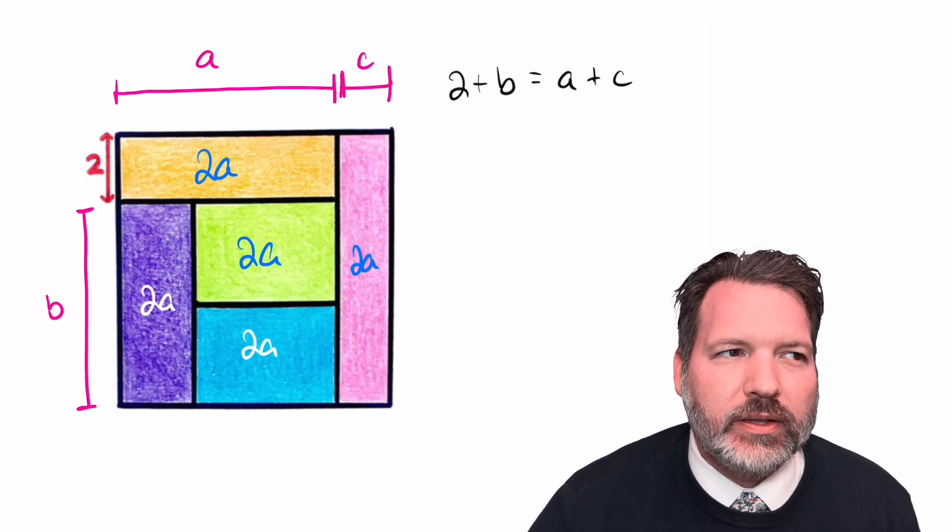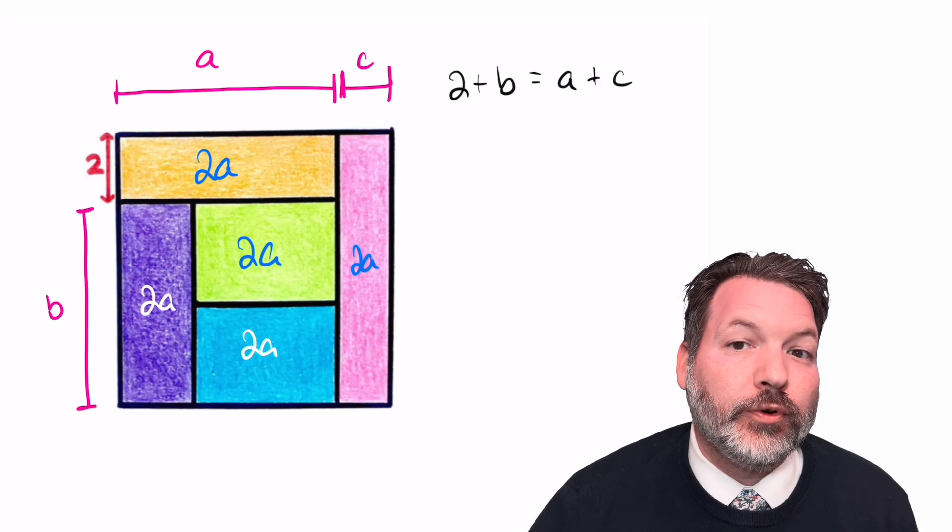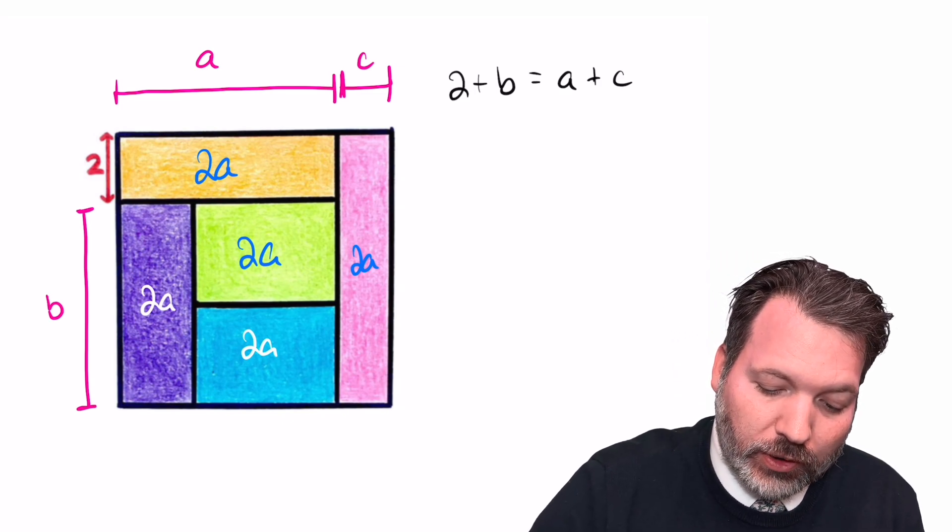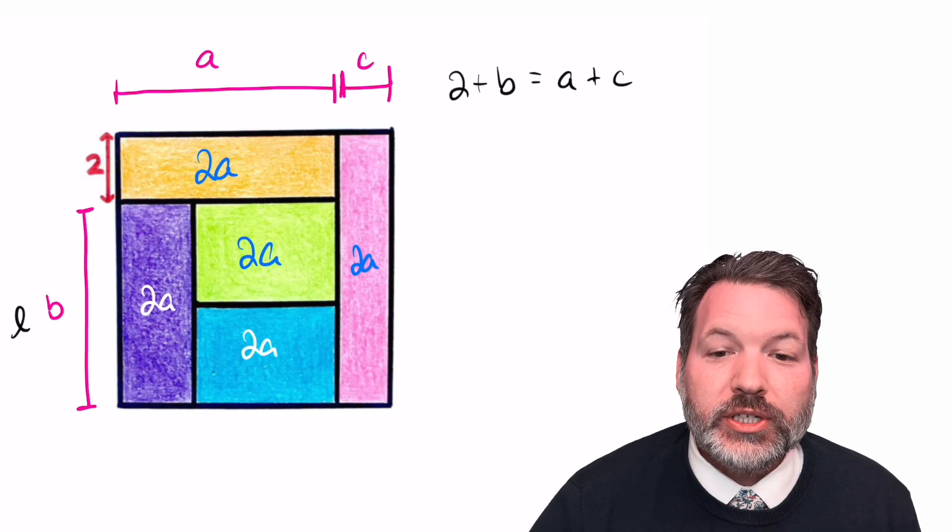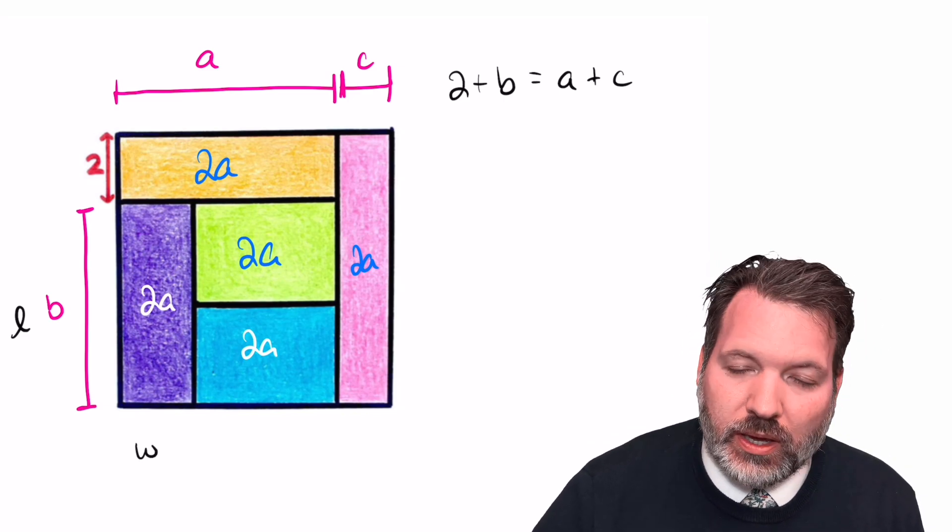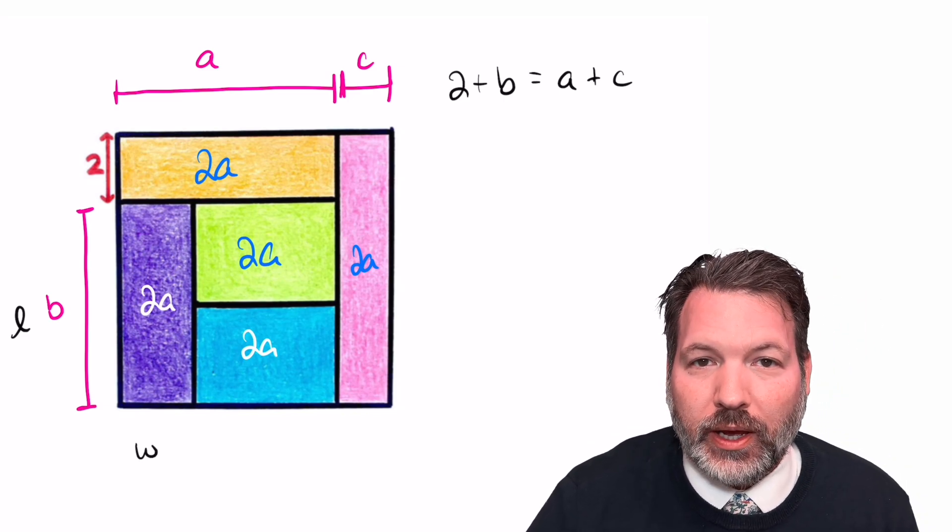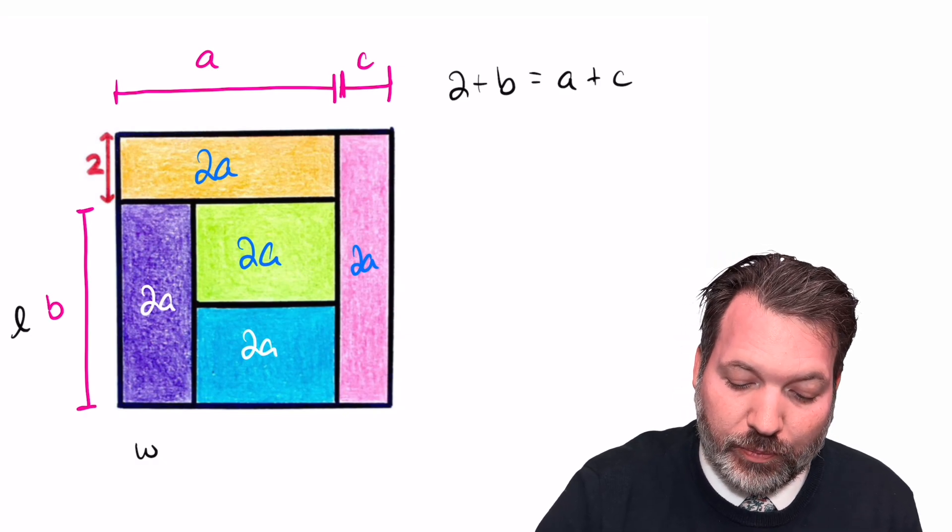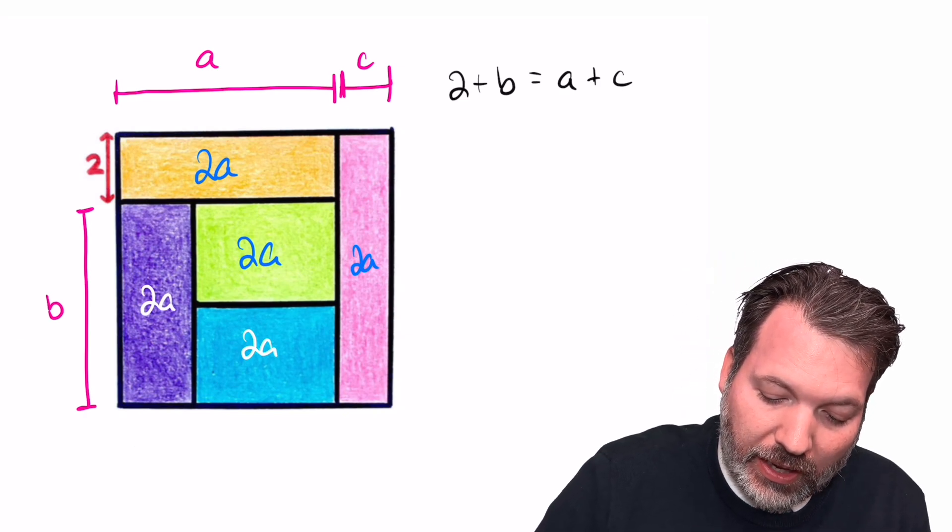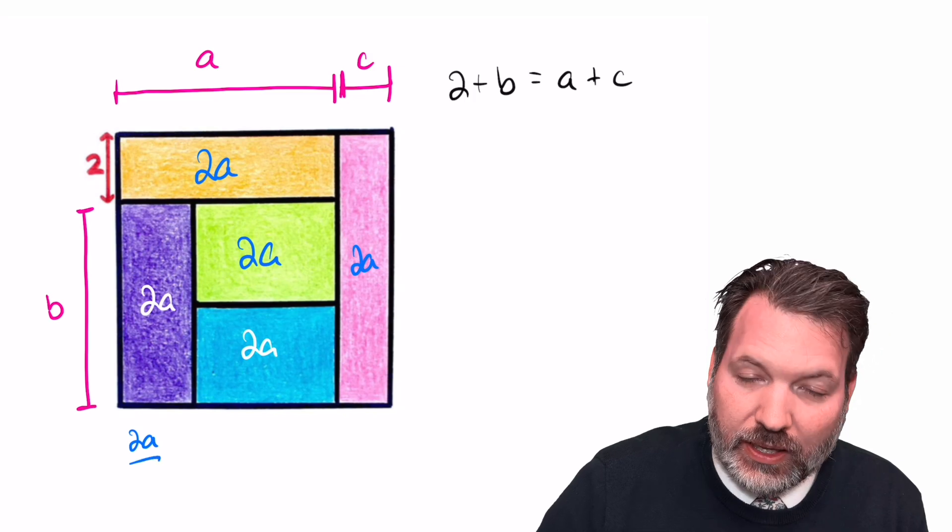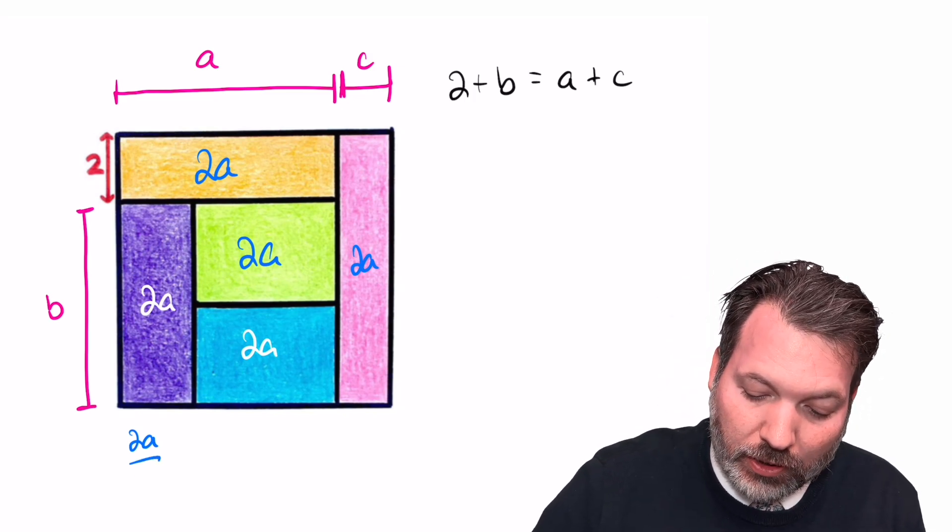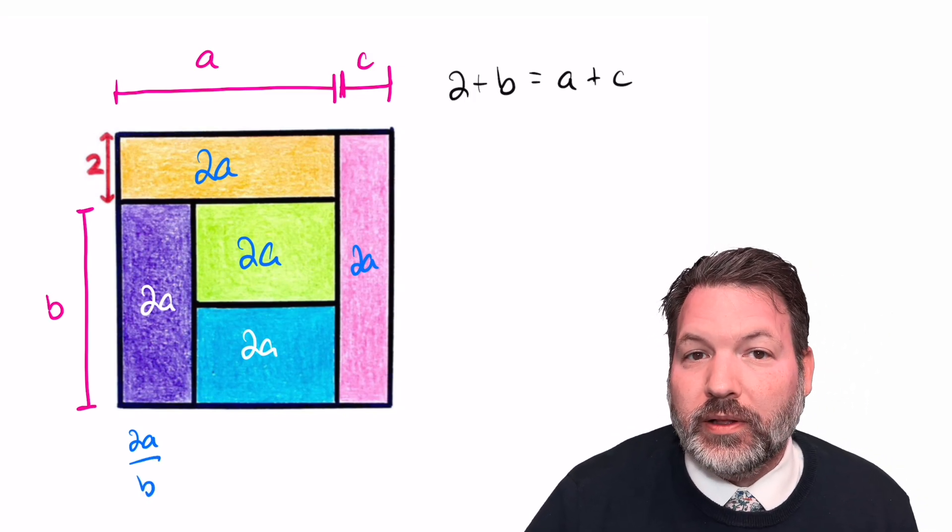Now, let's stick with the whole length times width equals area thing for rectangles for just a second. If we're looking at this purple rectangle, which has a length of b, its width here must be the same thing as the total area divided by that length of b. So in fact, we can go ahead and label this as 2a, that's the area of the purple rectangle, divided by b, divided by the length.